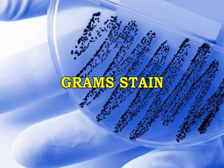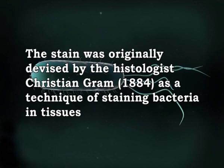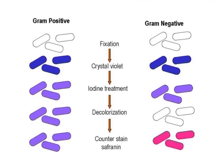Gram stain is the most widely used stain in bacteriology. It is a differential stain which imparts different colours to different bacteria or bacterial structures. The stain was originally devised by histologist Christian Gram in 1884 as a technique for staining bacteria in tissues. A modification of the original Gram stain is used today. Differentiation on Gram staining gives two broad groups: Gram positive, which resists decolourisation and retains the colour of the primary stain, which is violet; and Gram negative.